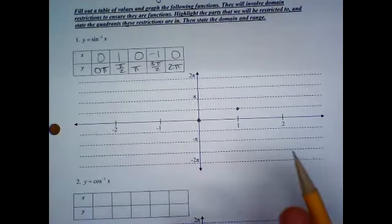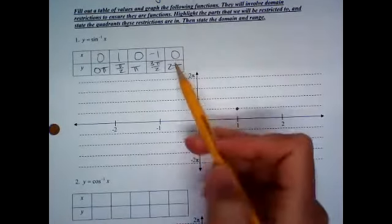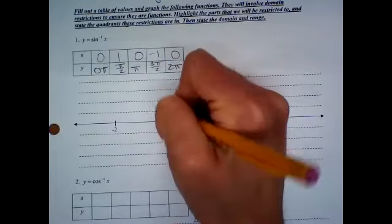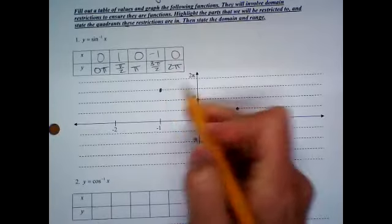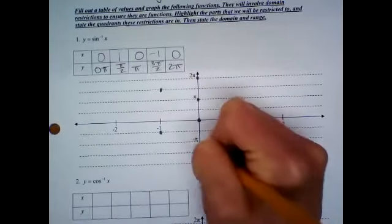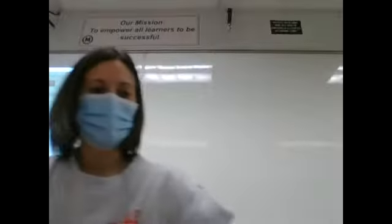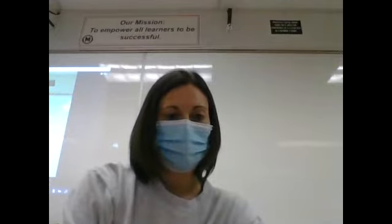I set it up for you. Then (0, pi), and then (negative 1, 3 pi over 2) — so it's going to be right here. And then you're back to 2 pi. You can keep the pattern going in the other direction. Let me draw it and then you'll be able to see it.